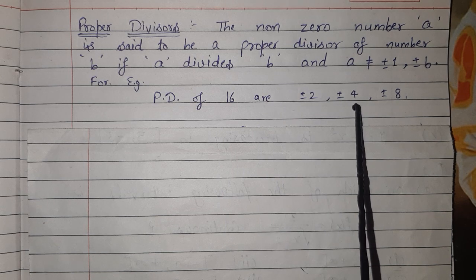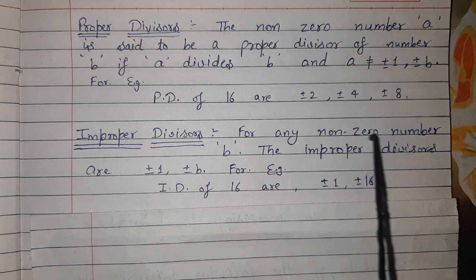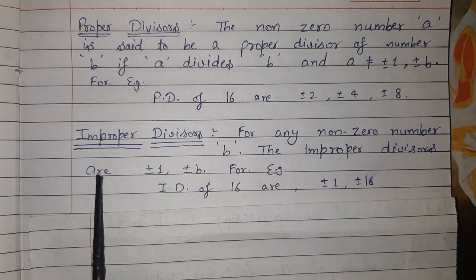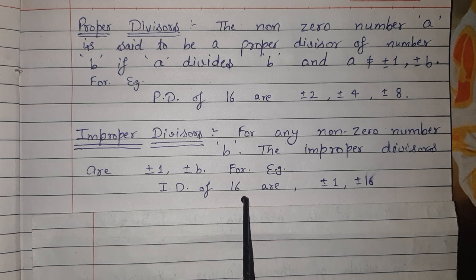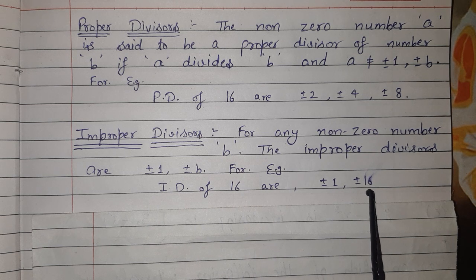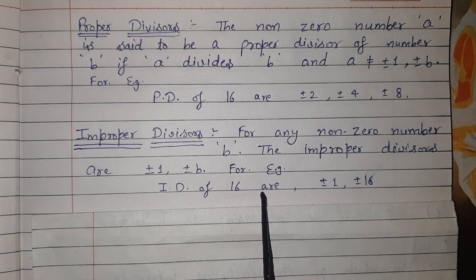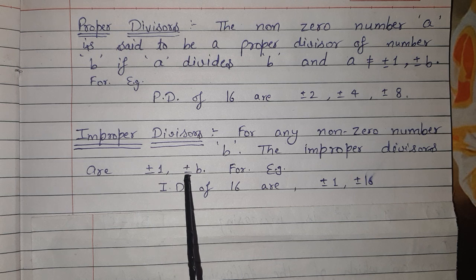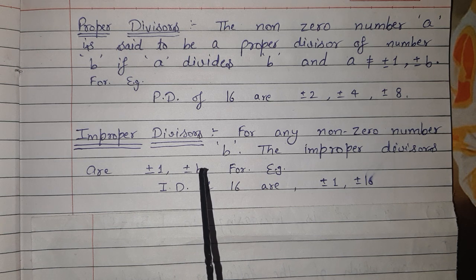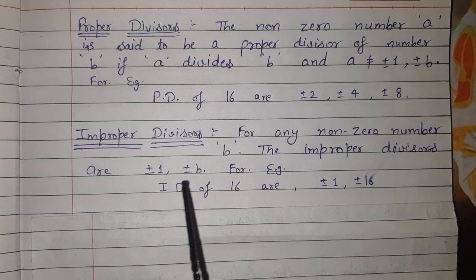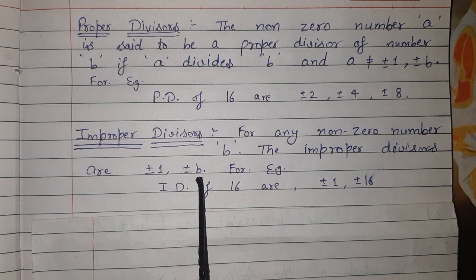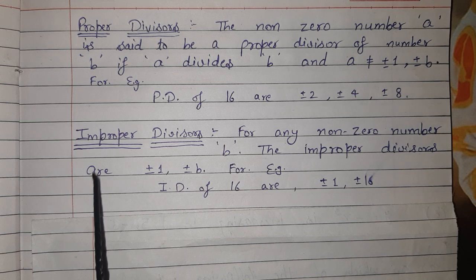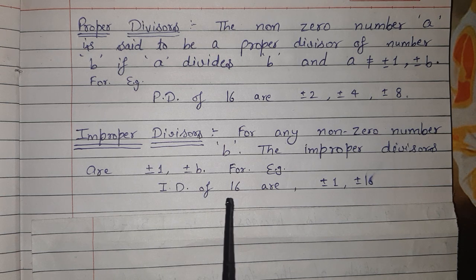Second hai improper divisors. For any non-zero number B, the improper divisors are ±1 and ±B. For example, the improper divisors of 16 are ±1 and ±16. Dosto, kisi bhi number ke ±1 aur ±wahi same number — ye hamare improper divisors ho jaate hain, kyunki ek number ek se bhag hoga hi, minus 1 se bhi hoga, aur same number ke plus-minus dono se bhi bhag hoga.